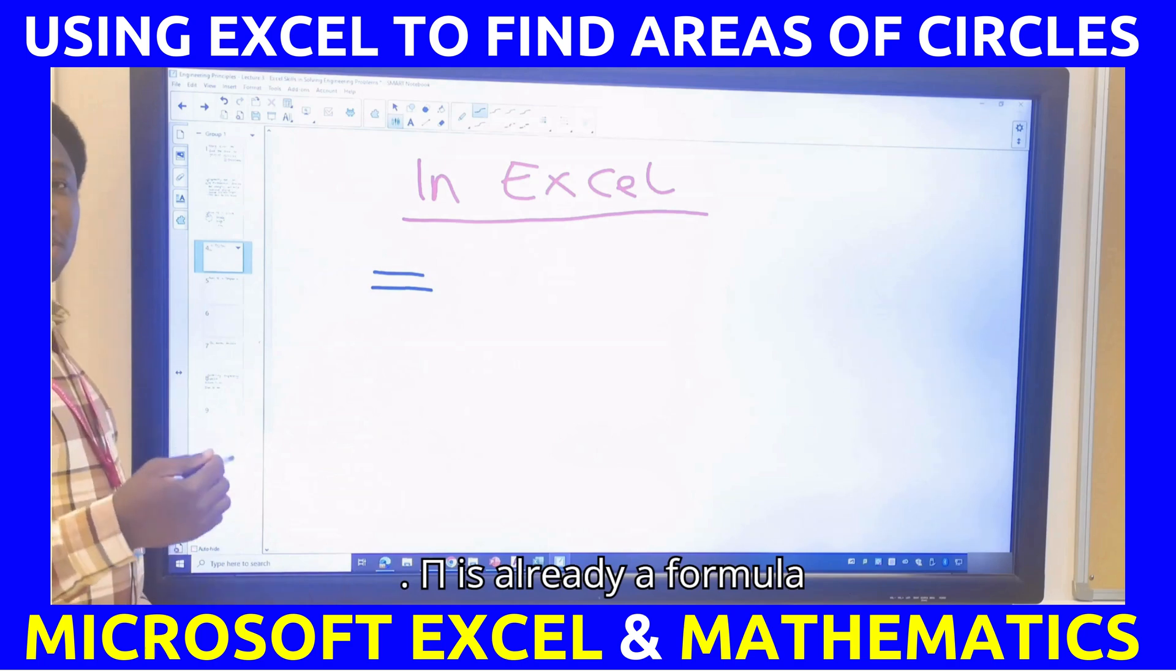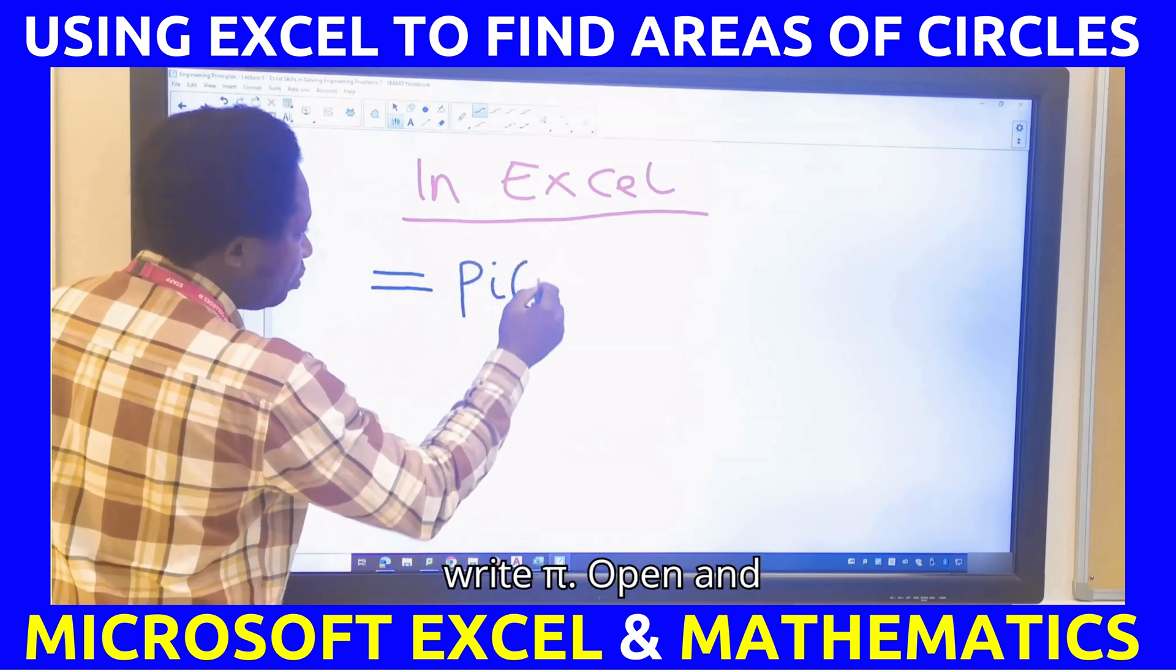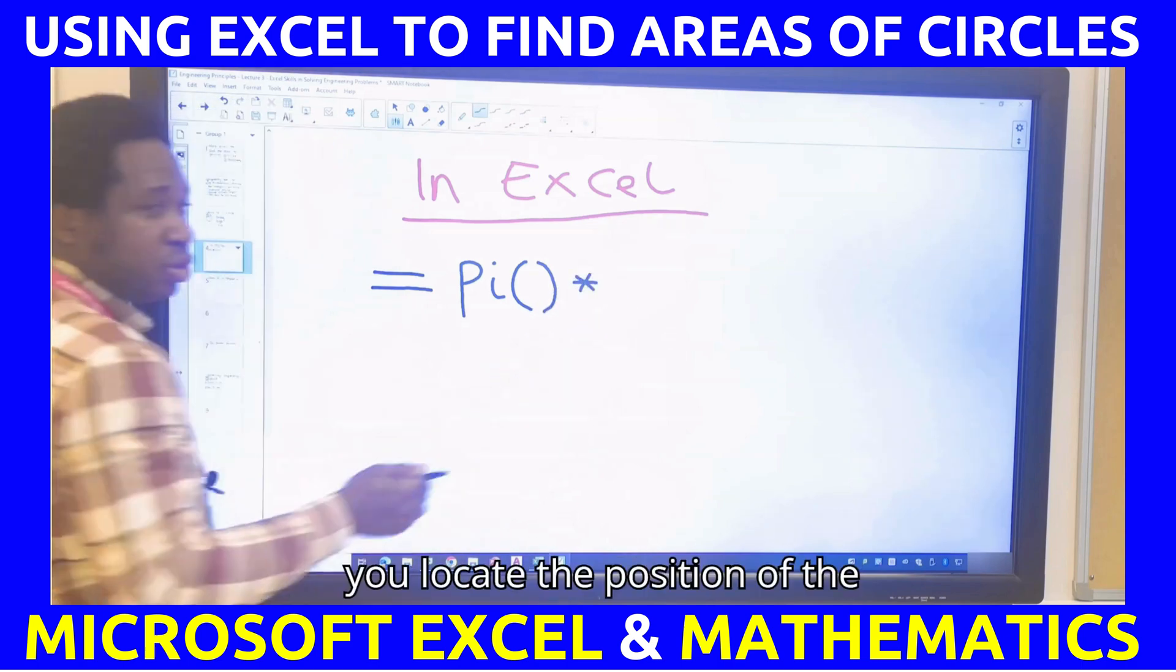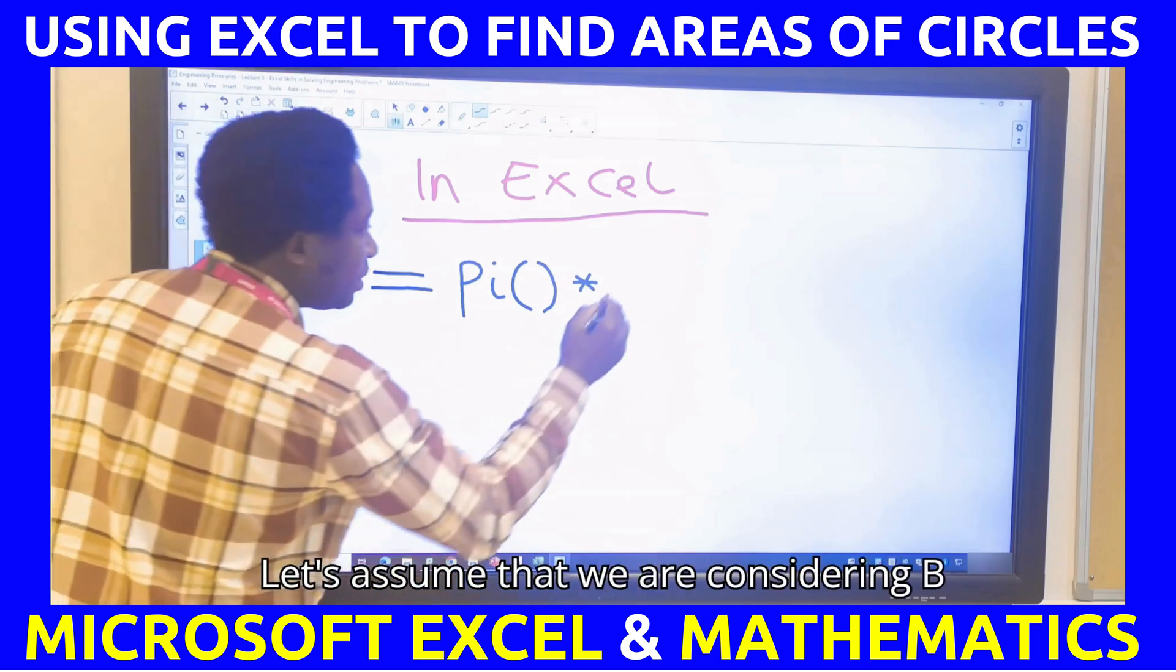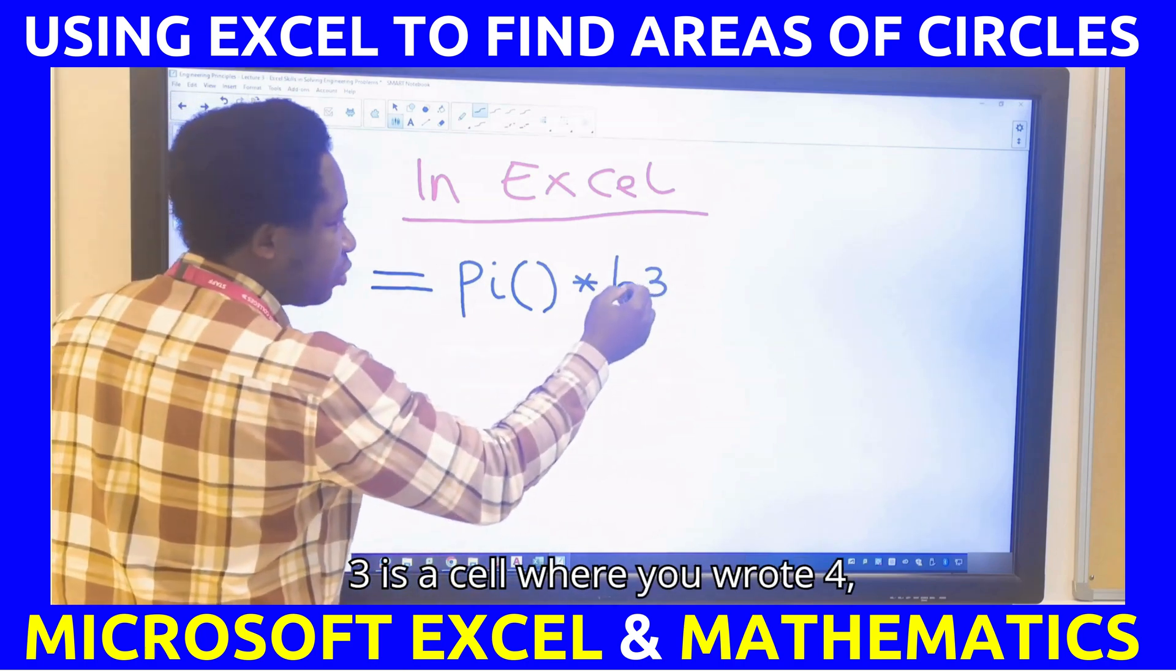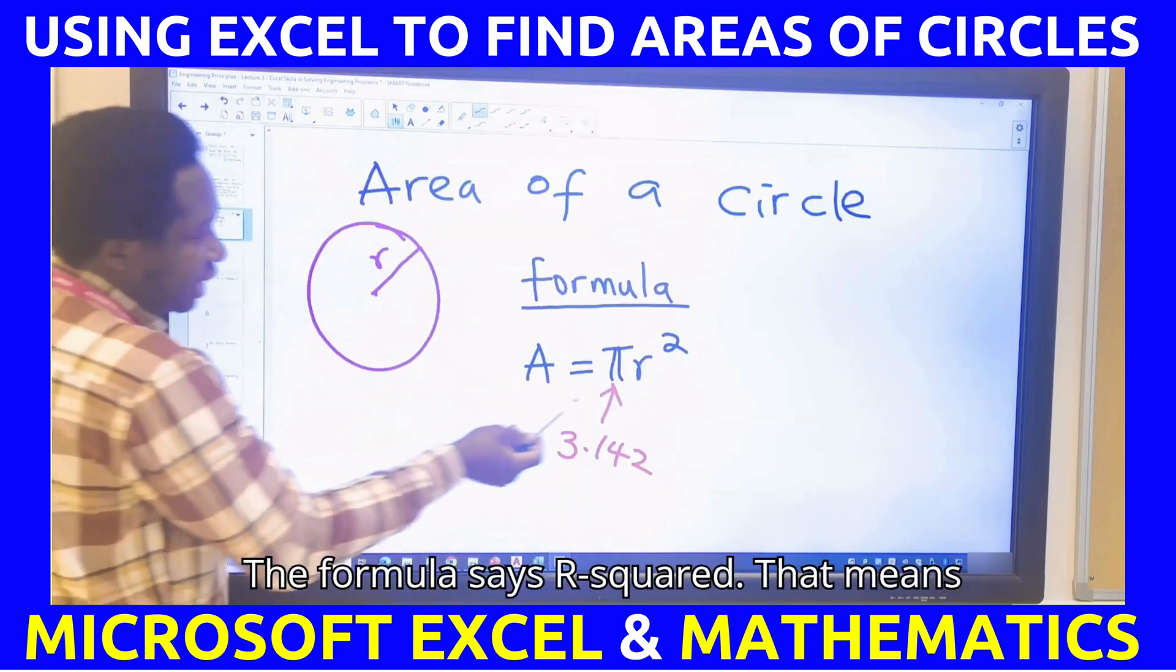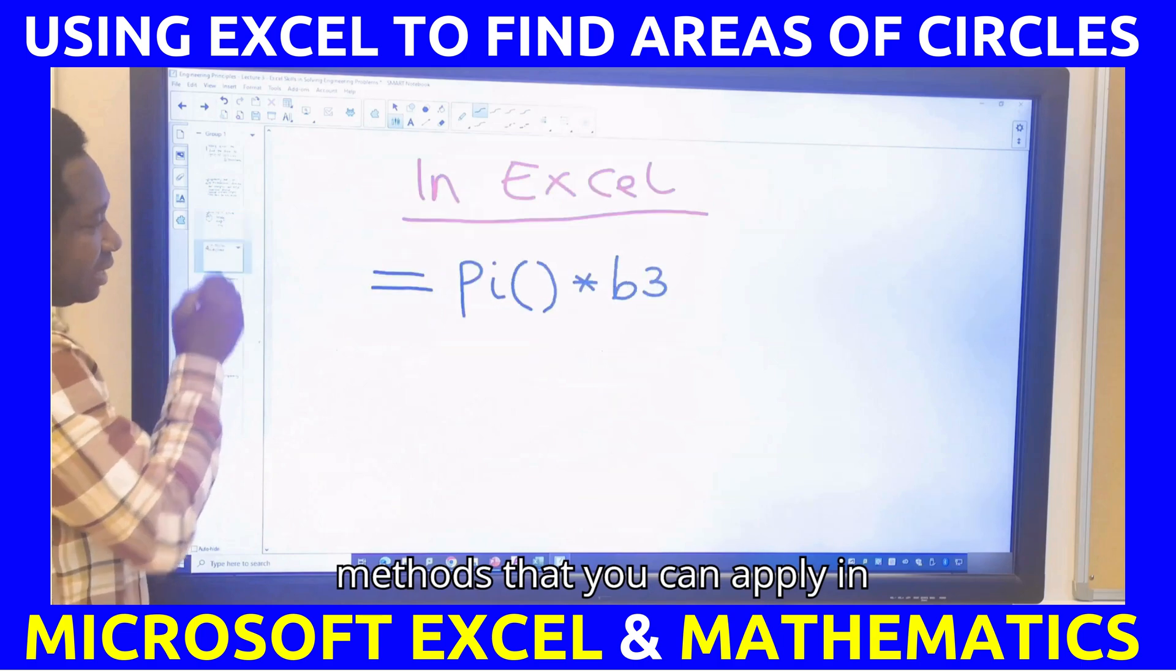Pi is already a formula recognized by Excel. You're going to write pi, open and close a bracket. The multiplying sign is the X star X on your computer. Next, for the R, you locate the position of the cell for the number under consideration. Let's assume that we're considering B3. That square maybe B3 is a cell where you wrote 4, for example. Or what you have there is 1.8, maybe meters or centimeters. The formula says R squared. That means you multiply it twice.